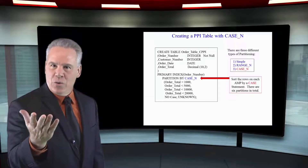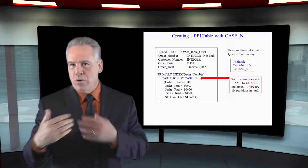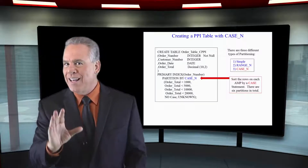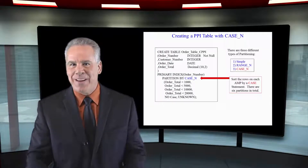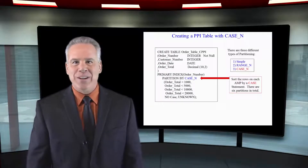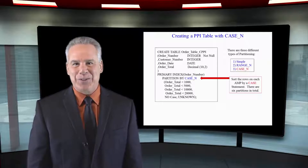And now when users query this where the order total is less than something or between something, it's going to not do a full table scan.